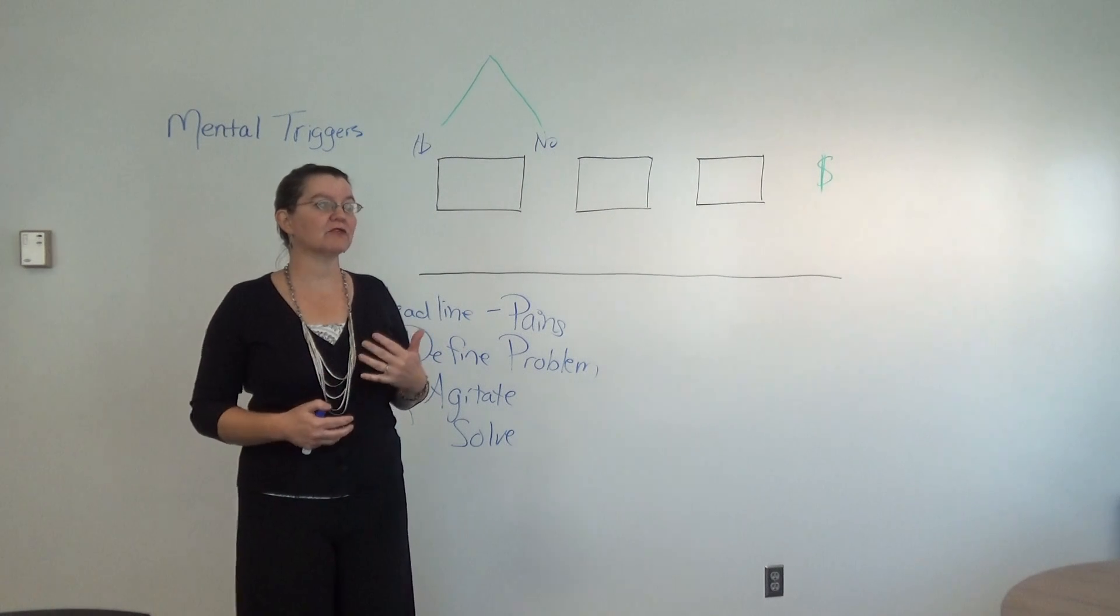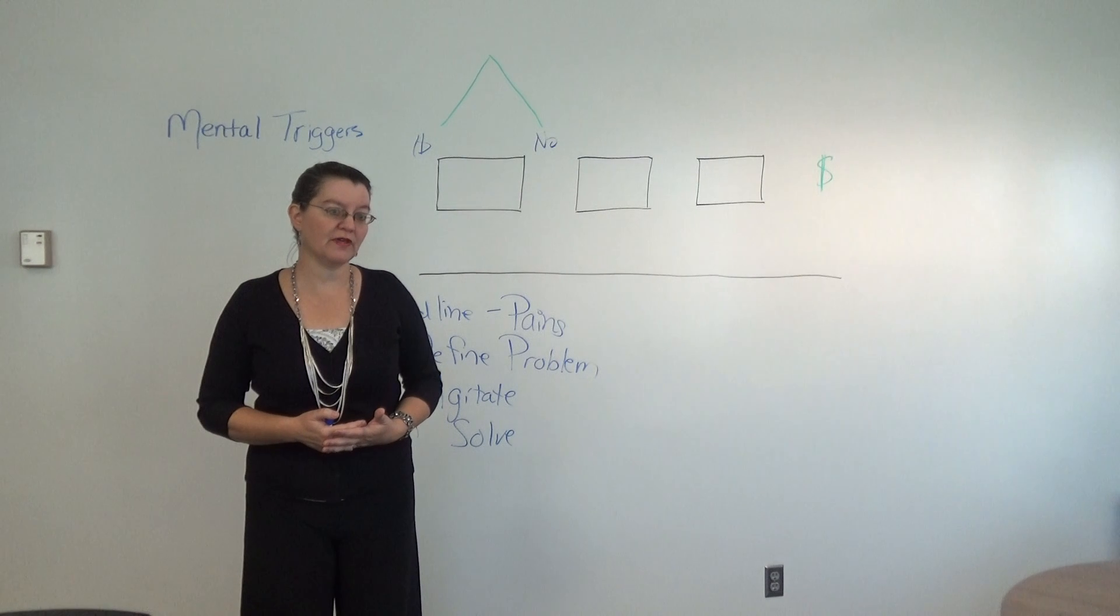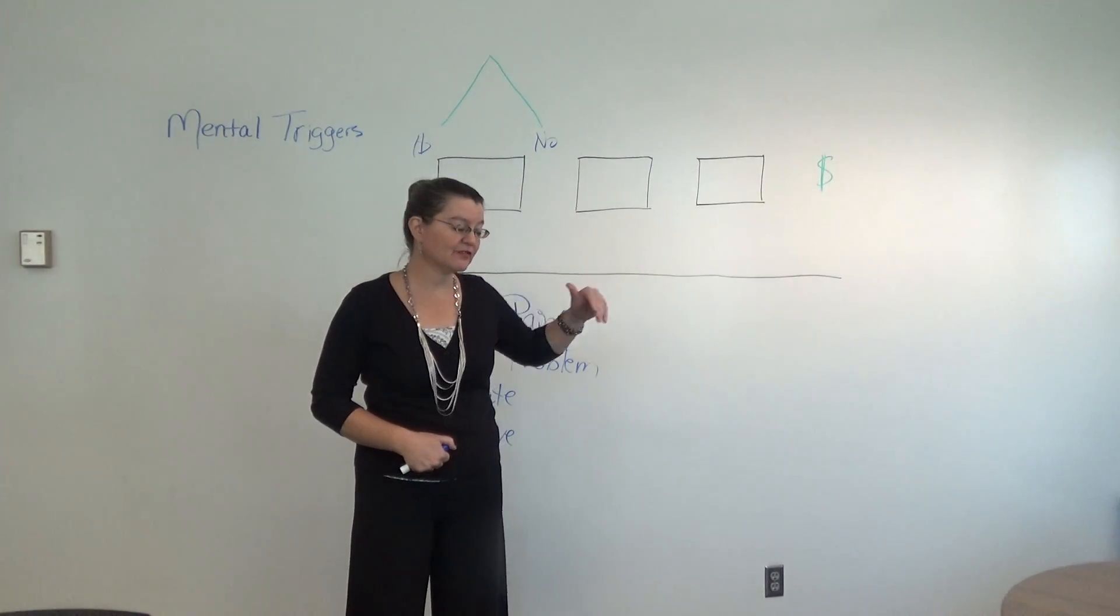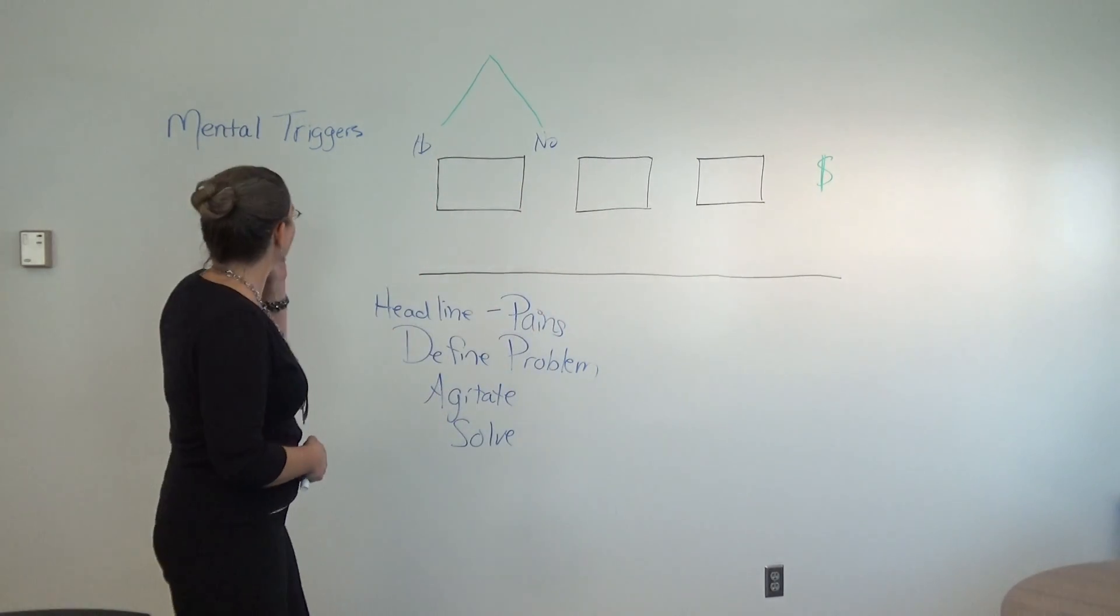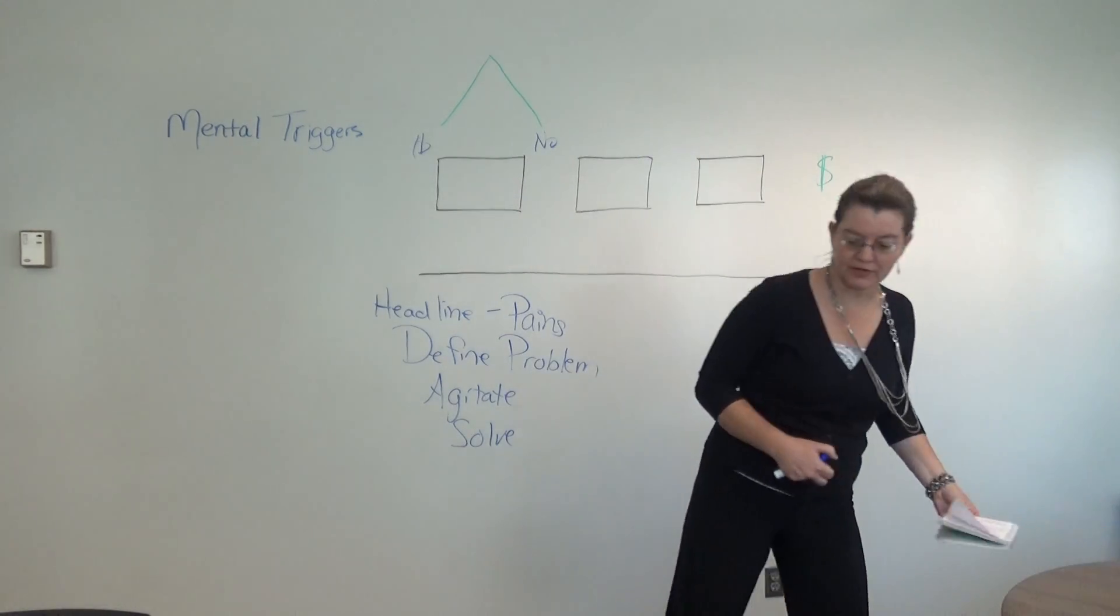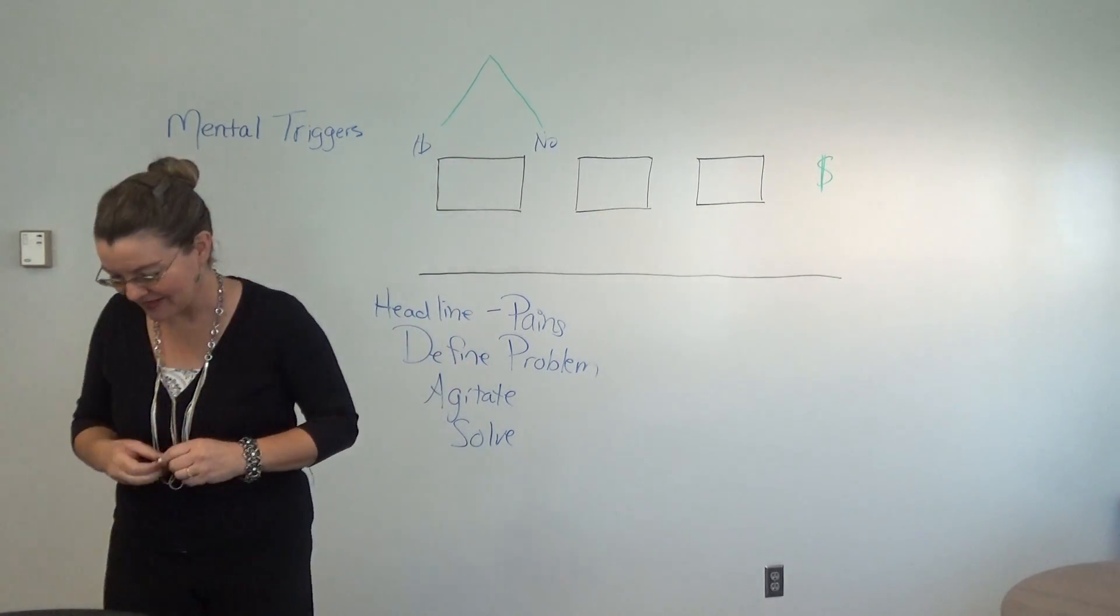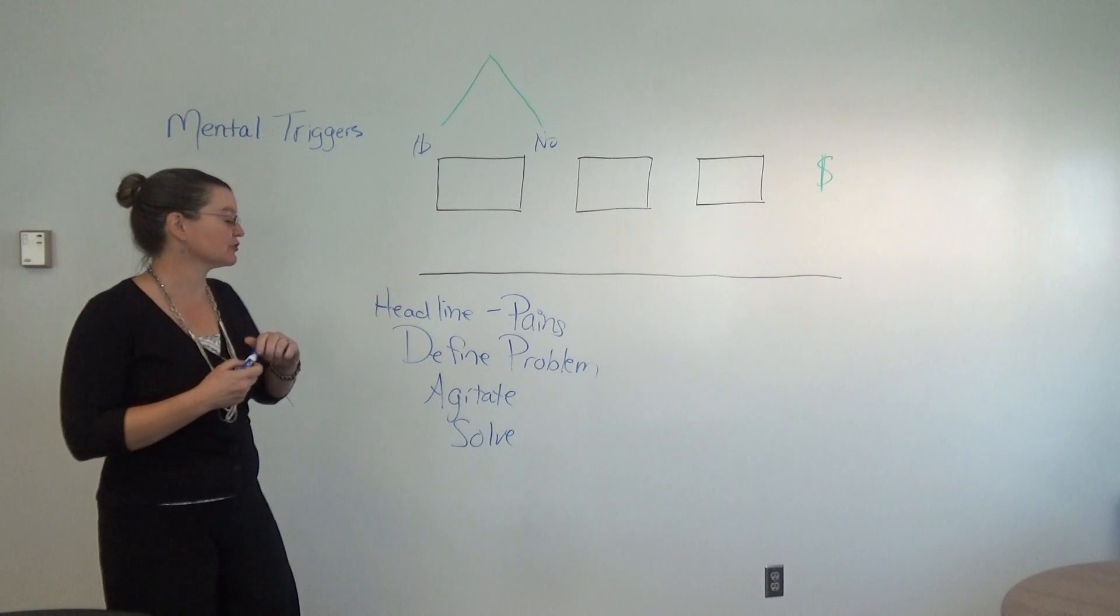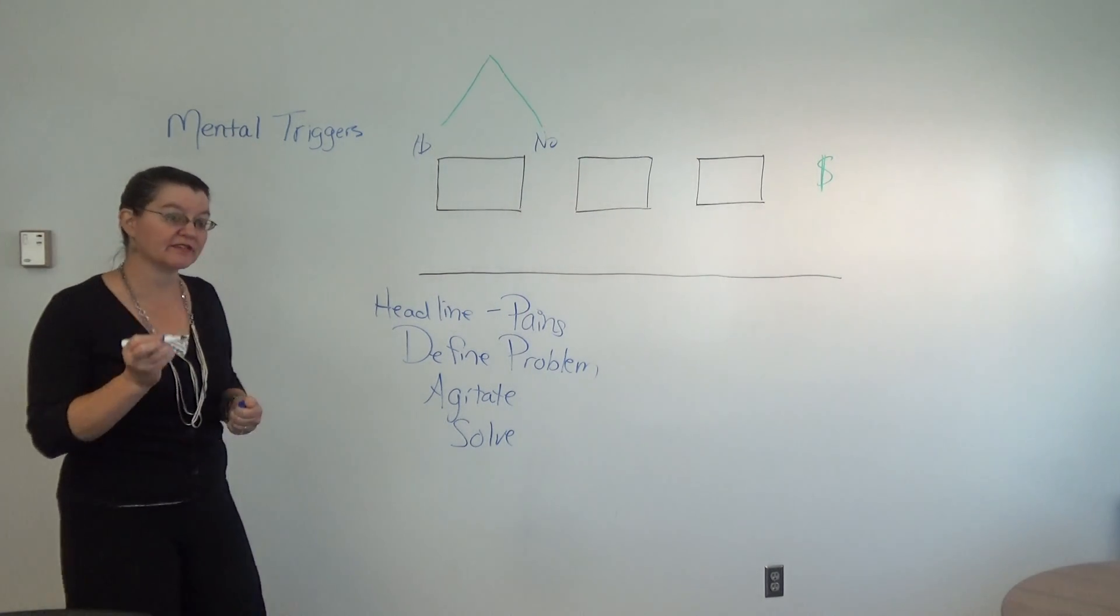If you think about there are triggers that have to take place within your sales process. These triggers, these are mental triggers that happen. The first thing that you're looking at in terms of mental triggers is your buyers are looking for someone who has authority.